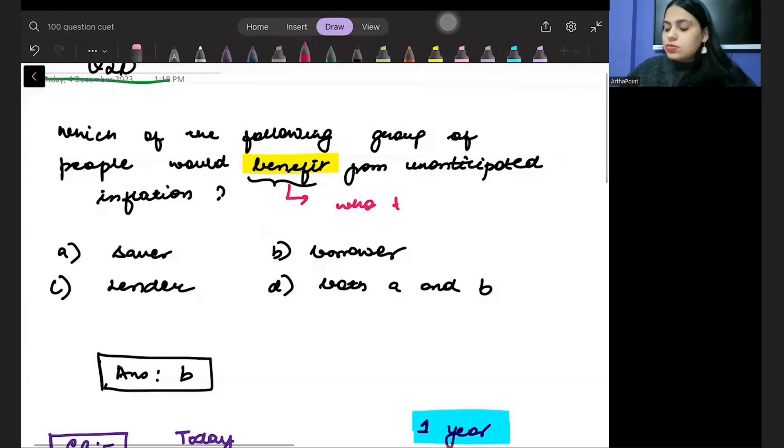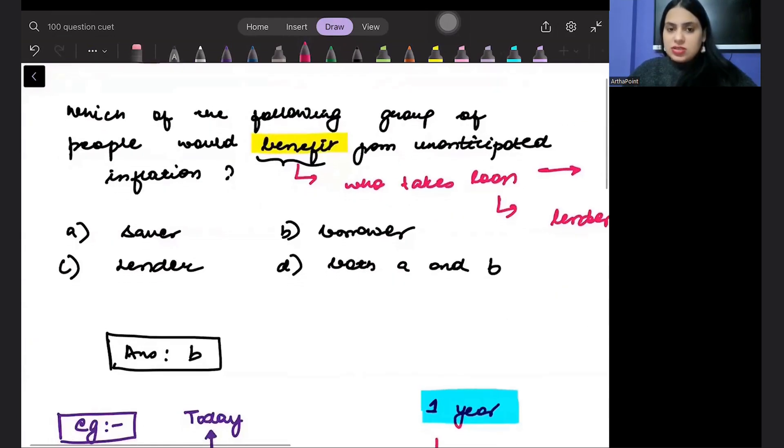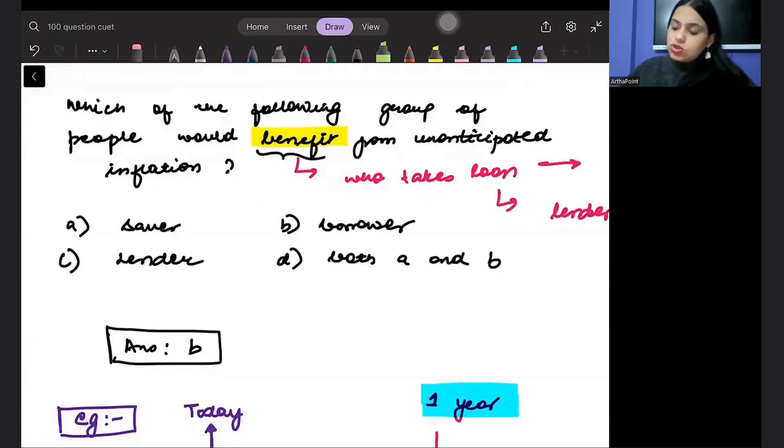The person who takes the loan, what do we call them? Borrower. He will benefit. And who will become worse off? The person who lends the loan, who saves money. Due to inflation, the value of their money decreases, so they are at a loss. The person who lends is at a loss, the person who borrows is at a benefit. So the answer to this question should be borrower. Am I clear on that? Okay, thank you.